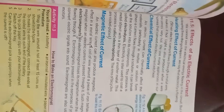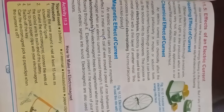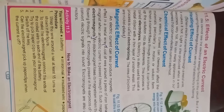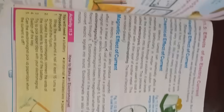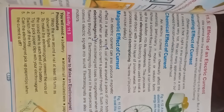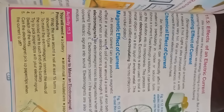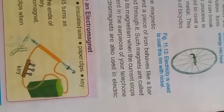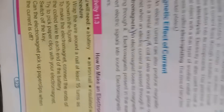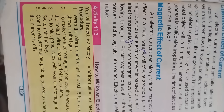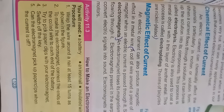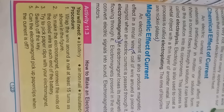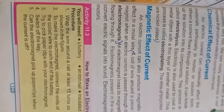Electromagnets in telephone earpieces convert electric signals into sounds, and are also used in electric motors. Activity 11.3: Making an electromagnet. You will need a battery, an iron nail, insulated wire, paper clips, and a key. Wrap the wire around the nail at least 15 times. Connect the ends of the coil wire to each end of the battery. Try to pick up paper clips with your electromagnet. Can the magnet pick up paper clips when the current is off?